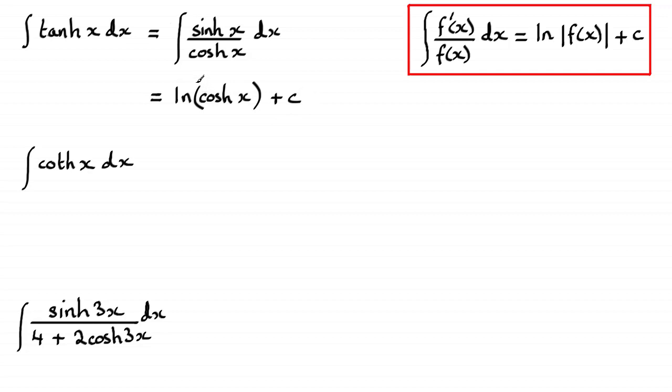Now, I could have written this one with mod signs down here, but there's no need to, because cosh x is always a positive value for all values of x. So there's no need to write a mod sign in there.